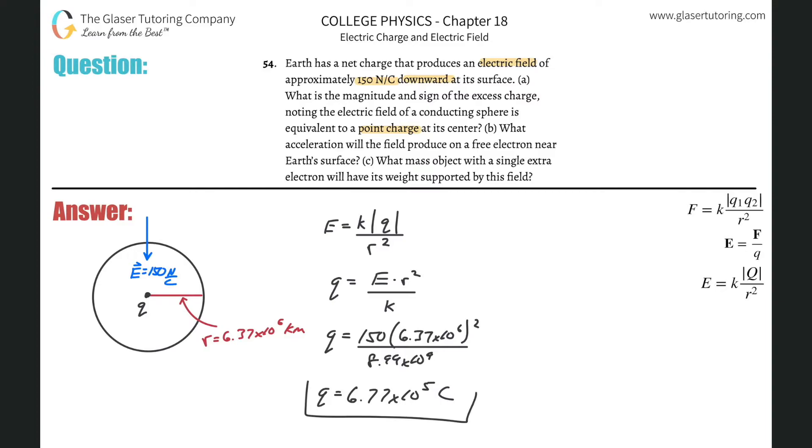So we have 6.77 times 10 to the fifth, and that's in terms of Coulombs. And there you go. That's letter A done. Letter B.